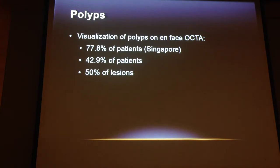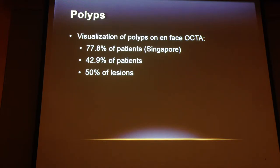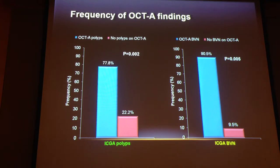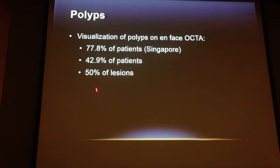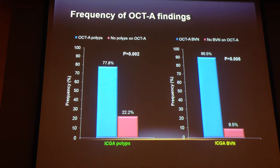So how about polyps? This is what we all get excited about with PCV. To summarize: visualization of polyps can be seen on OCTA, ranging from 42.9% to 77.8% in our experience. In our series of PCV patients, when we identified a polyp on an ICG angiogram, in 78% of eyes we were able to also see a polyp at the same location on the OCT angiogram — though this was lower in other studies, about 50% or less. When we saw a BVN on the ICG angiogram, we found that 91% of the time we were also able to see this on the OCT angiogram.